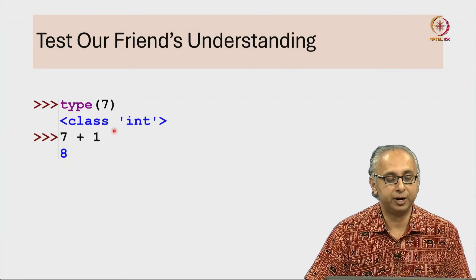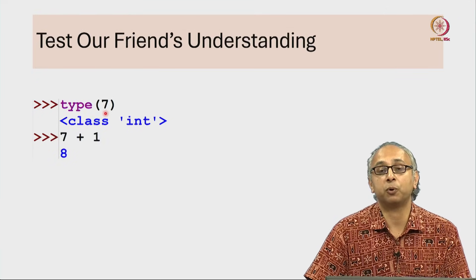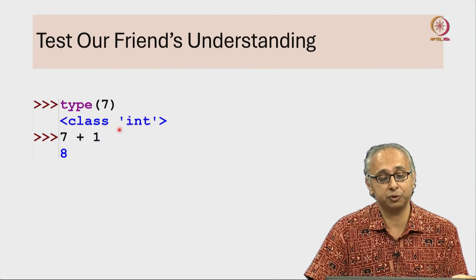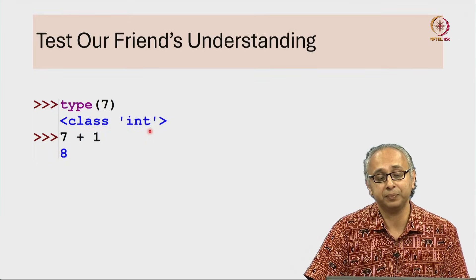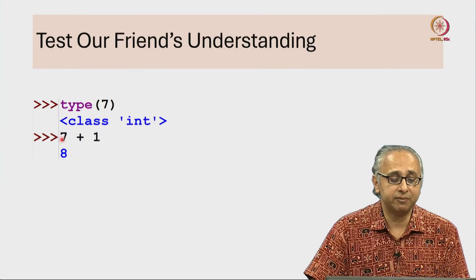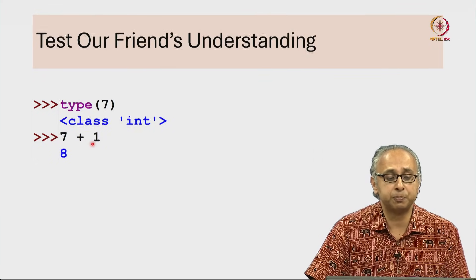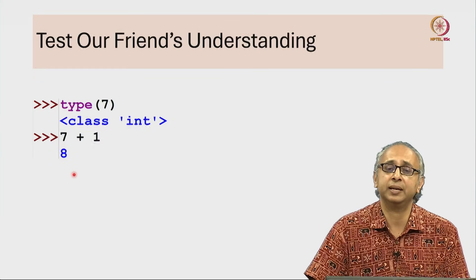Firstly in the REPL, our friend has calculated what the type of 7 is and no surprise that's an int. Then they've used this 7, this integer object as part of an expression and 7 plus 1 is 8.